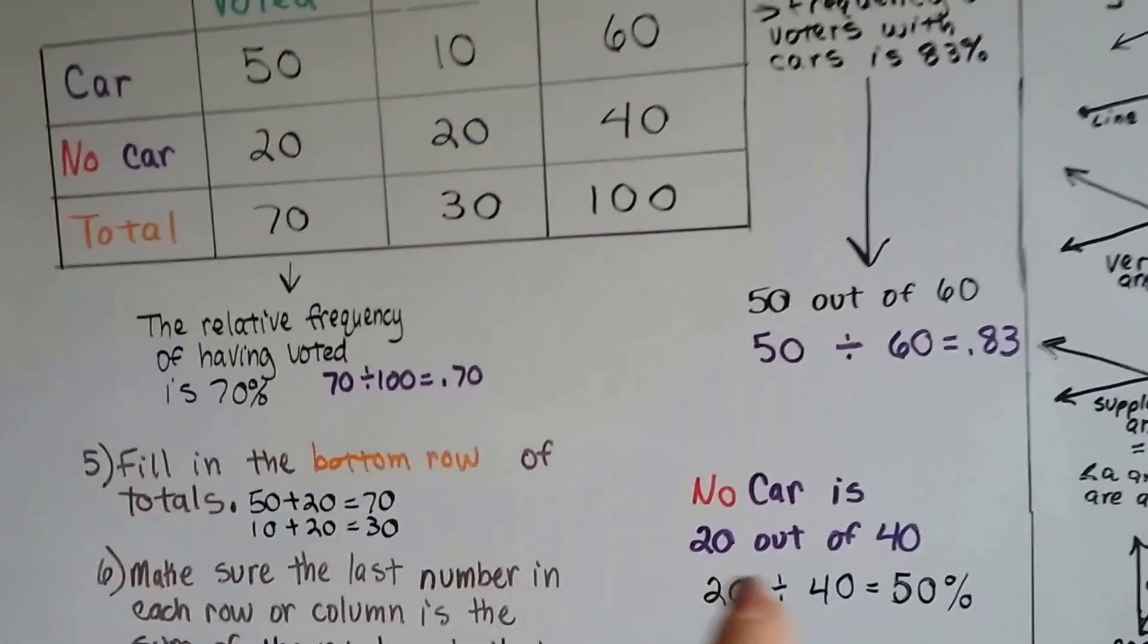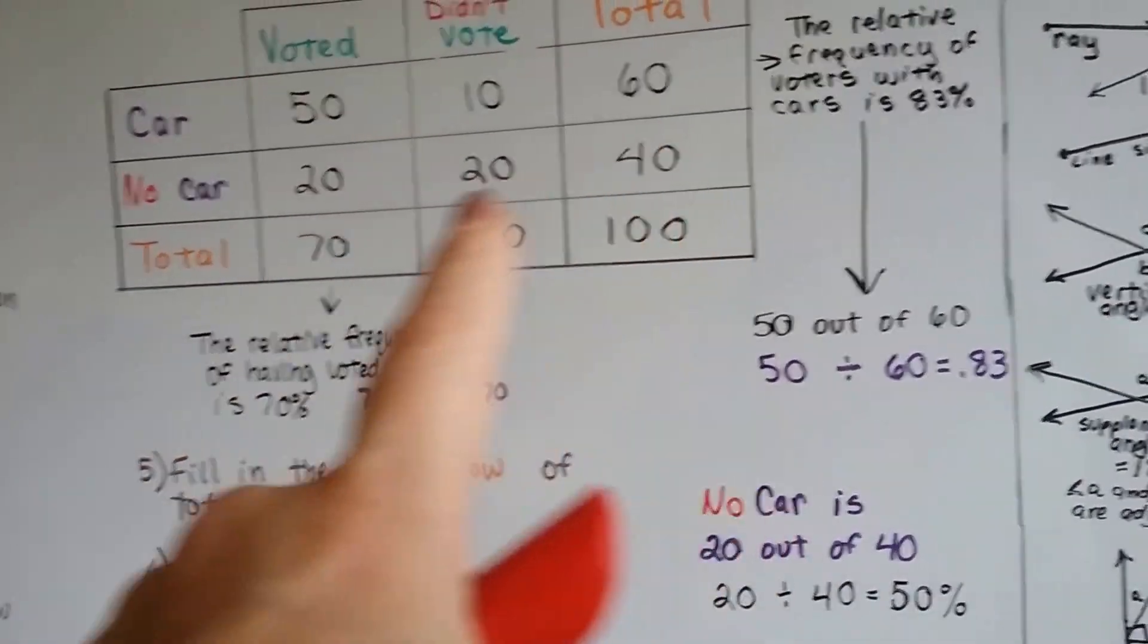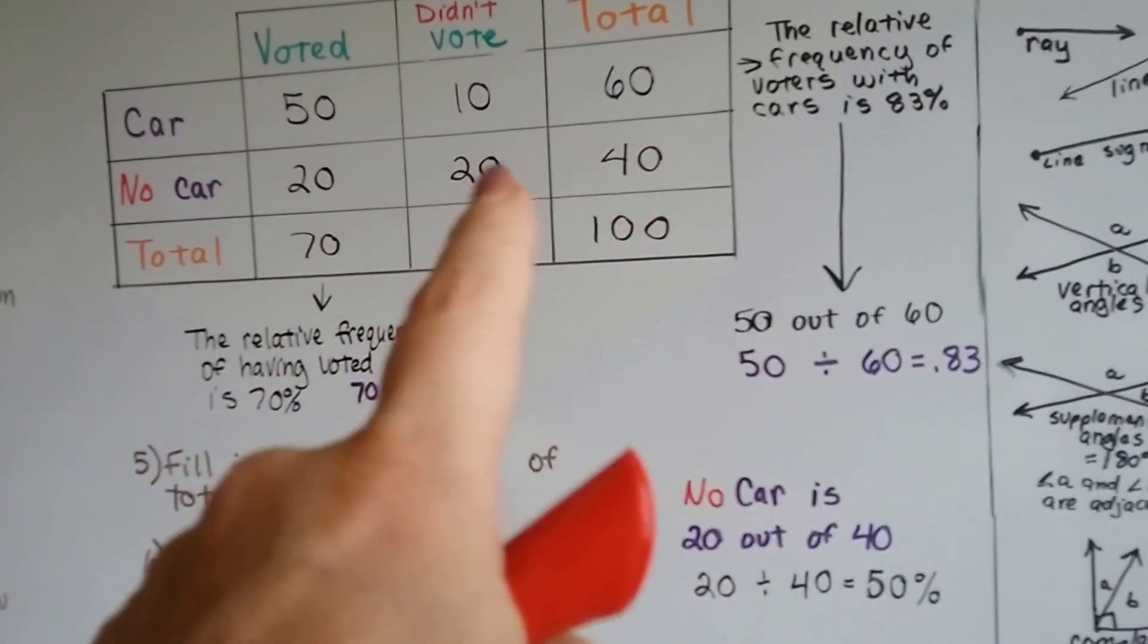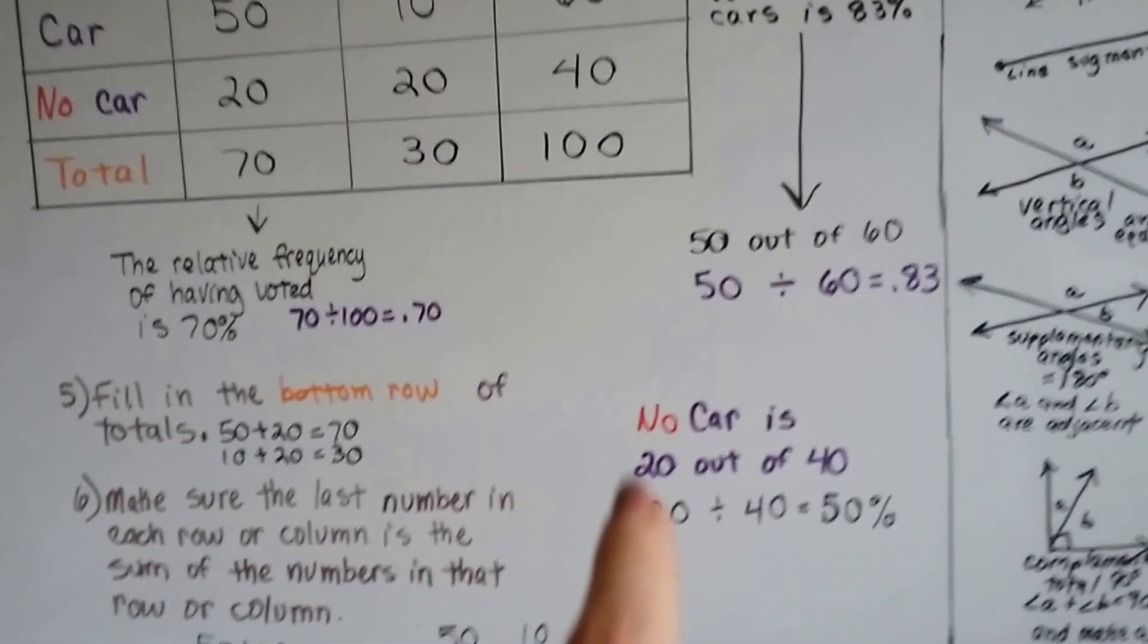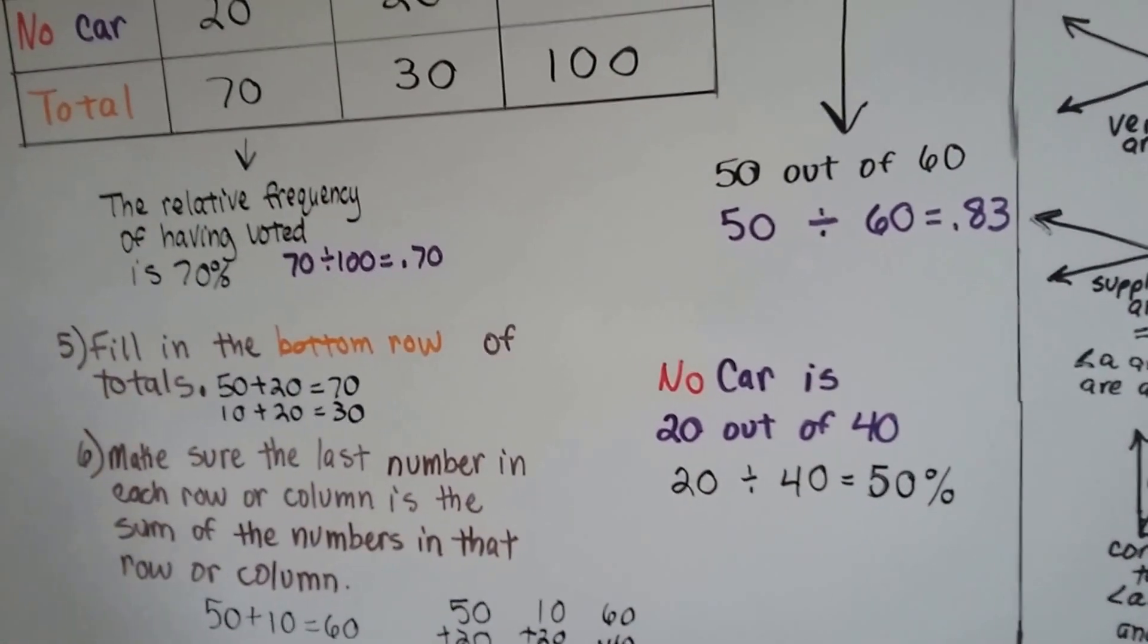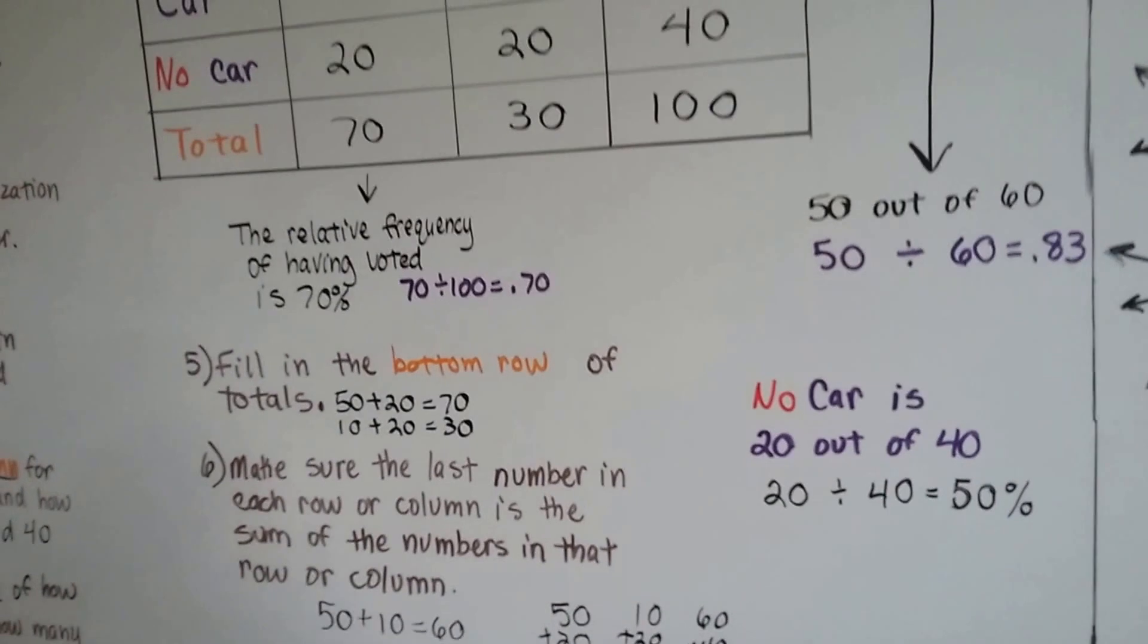And then no car is 20 out of 40. No car that voted is 20 out of 40. So 20 out of 40 is 20 divided by 40, and that's 50%. It's 0.50.